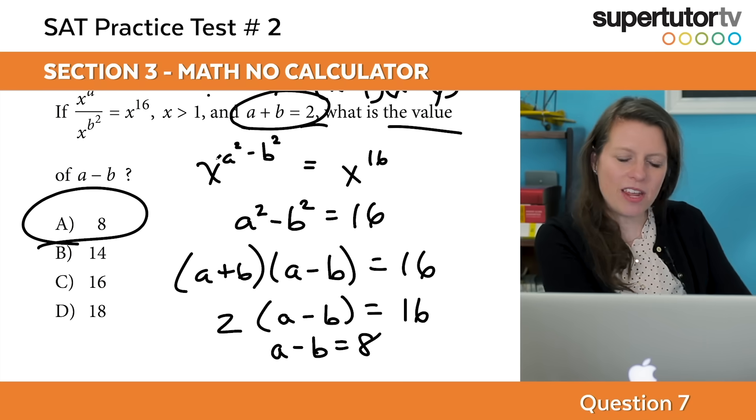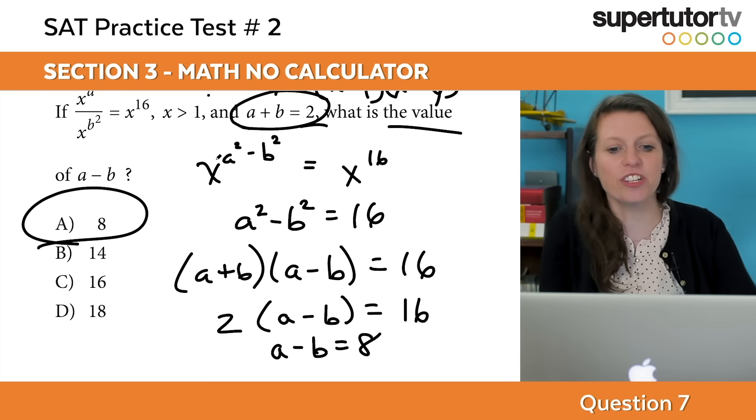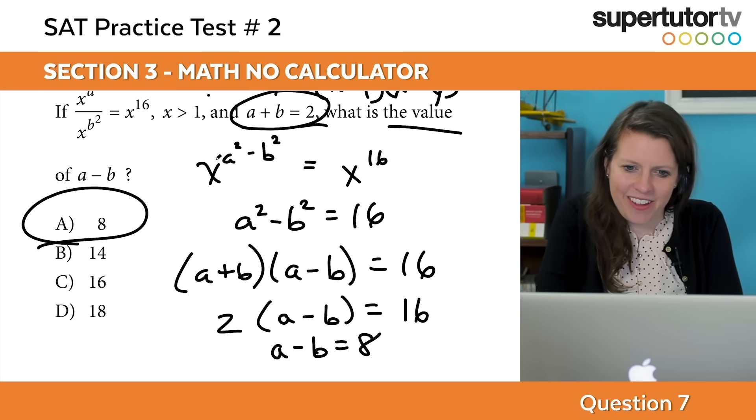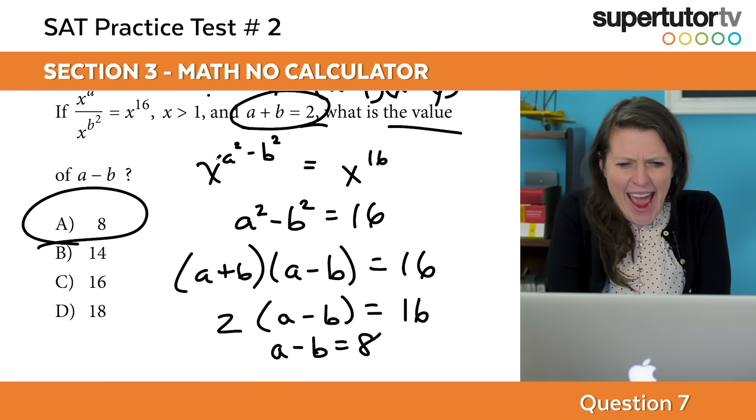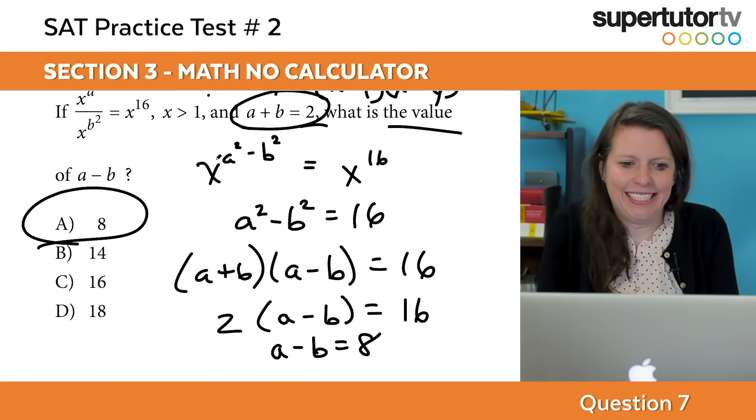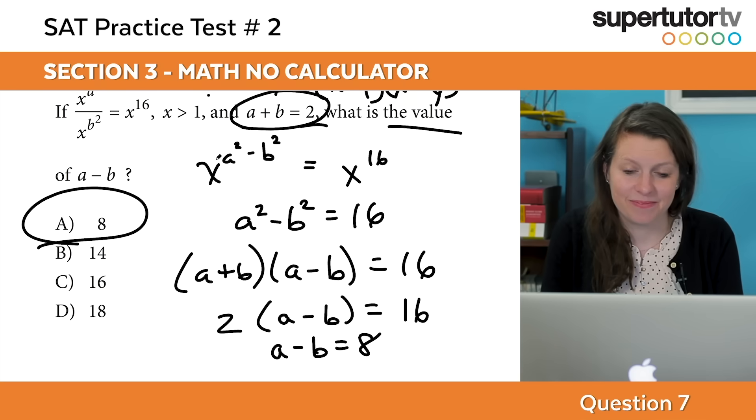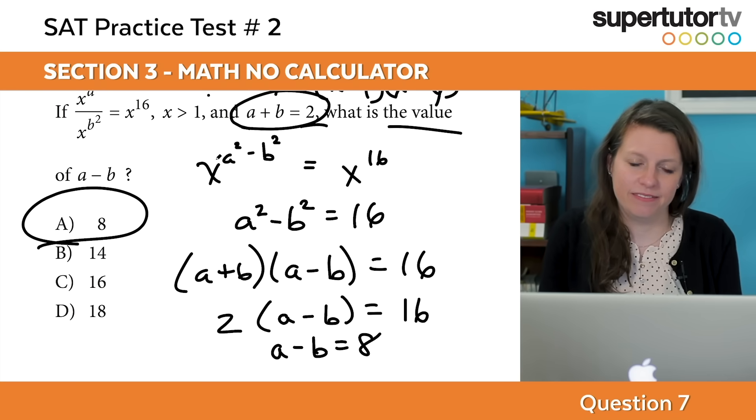We don't even have to solve for a and for b. You could solve for a and b knowing these. You could add those together and you get 2a equals 10, then a equals 5, b equals negative 3. But you don't even need to go that far. If you went that far, you went too far.